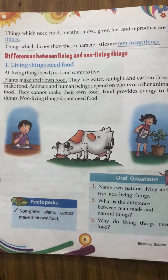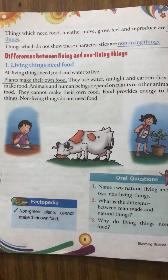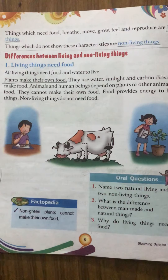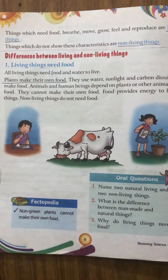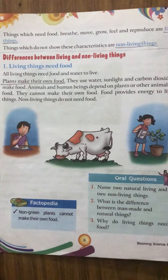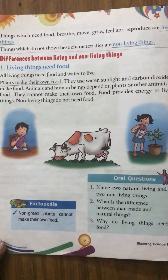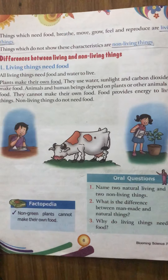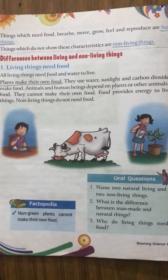For example, we get rice and wheat from plants. Animals also depend on plants for their food, and we also depend on animals for some of our food. Food provides energy. Non-living things, on the other hand, do not need food. So the first point is: living things need food, and non-living things do not need food.